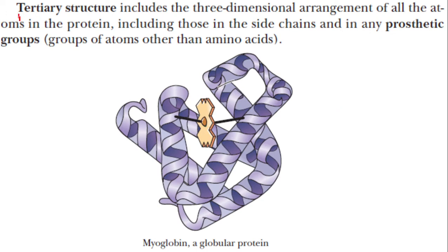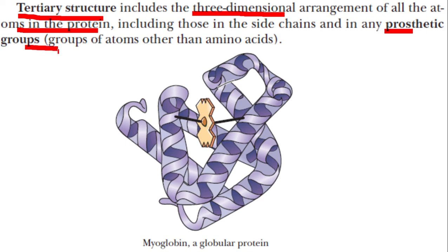What is a tertiary structure? It includes the three-dimensional arrangement of all the atoms in the protein, including those of the side chains, those of the backbone, and those of any prosthetic groups attached with the proteins. You know that a protein is made up of amino acids, and sometimes the protein may contain non-amino acid residues. All those atoms are arranged in a particular three-dimensional form, and that structure is called tertiary structure.